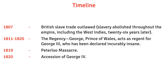1807: British slave trade outlawed. Slavery was abolished throughout the empire, including the West Indies, 26 years later. 1811–1820: The Regency. George, Prince of Wales, acts as regent for George III, who has been declared incurably insane. 1819: The Peterloo Massacre. 1820: Accession of George IV.